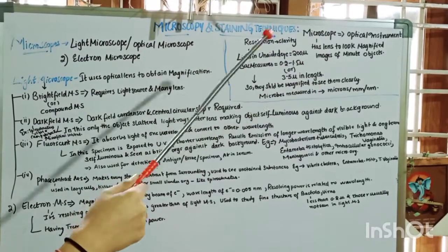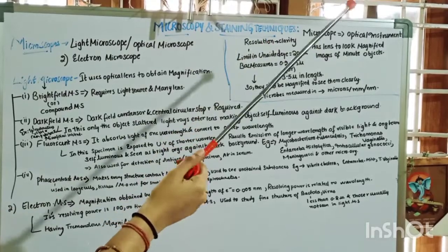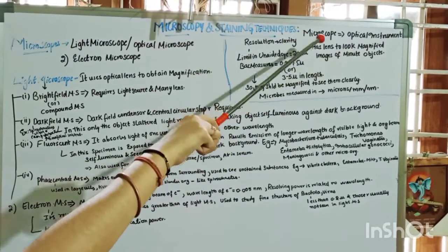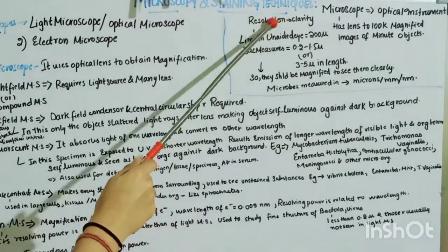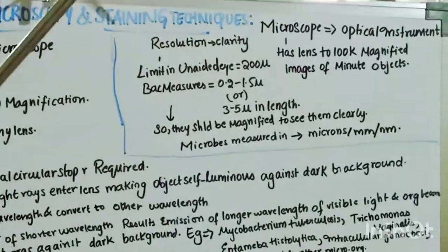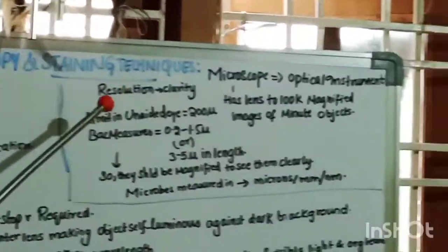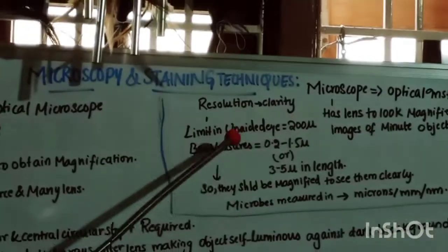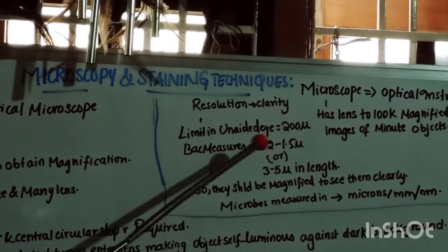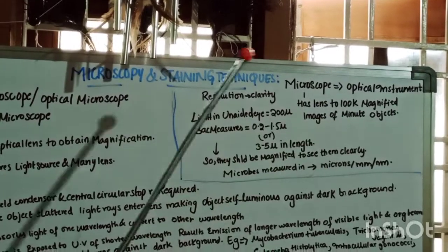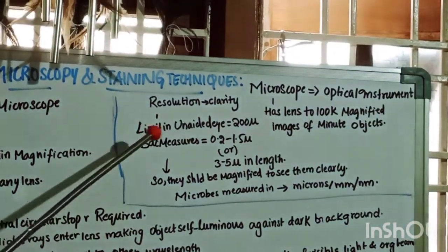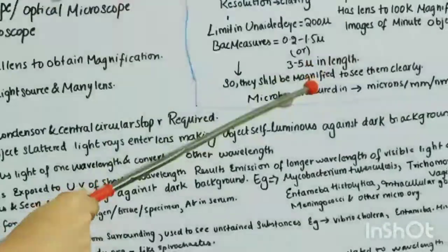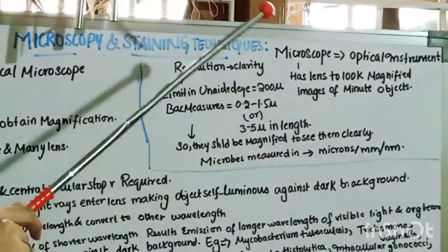First we need to know some basic things like what is a microscope and what is resolution. A microscope is an optical instrument which has a lens to look at the magnified images of minute objects. Resolution is the clarity — how much clarity we can see in that image. The resolution limit of an unaided eye is 200 microns, and bacteria measure about 0.2 to 1.5 microns, or 3 to 5 microns in length.